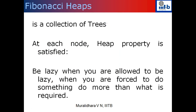A Fibonacci heap is a simple collection of trees where at each node the heap property is satisfied. It's a collection of trees, as in the case of a binomial heap. In a binomial heap, each tree had a very rigid structure — every tree had to be a binomial tree of order k, and we were not allowed to have two trees of the same order. All those conditions have been relaxed here. In a Fibonacci heap, it's just a collection of trees where each node satisfies the heap property: the value at every node should be smaller than or equal to the values of its children.